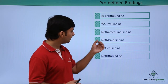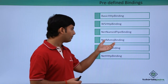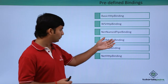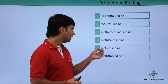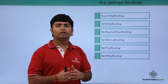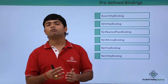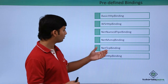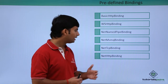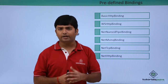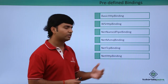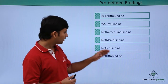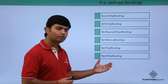Other bindings include Net Named Pipe binding, Net MSMQ (Microsoft Message Queuing) binding, and Net TCP — in case you are working with any Windows-based application, you can go for the Net TCP binding. There is also Net HTTP binding, which is another flavor of the HTTP binding.